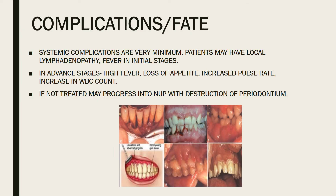Systemic complications are minimal initially — patients may have local lymphadenopathy and mild fever. In advanced stages, high fever, loss of appetite, increased pulse rate, and elevated WBC count are seen. If untreated, ANUG may progress into necrotizing ulcerative periodontitis (NUP) with destruction of the periodontium.